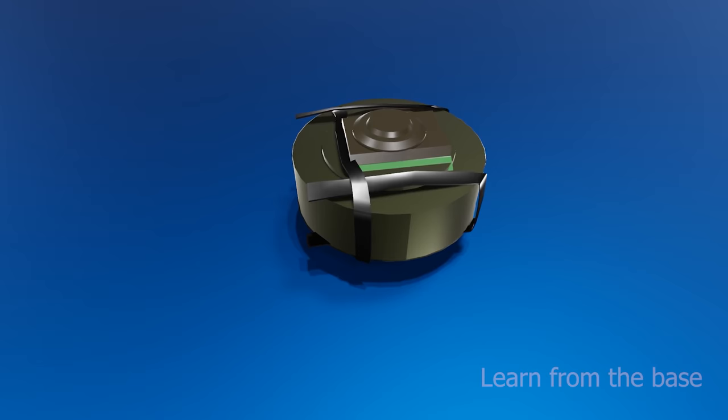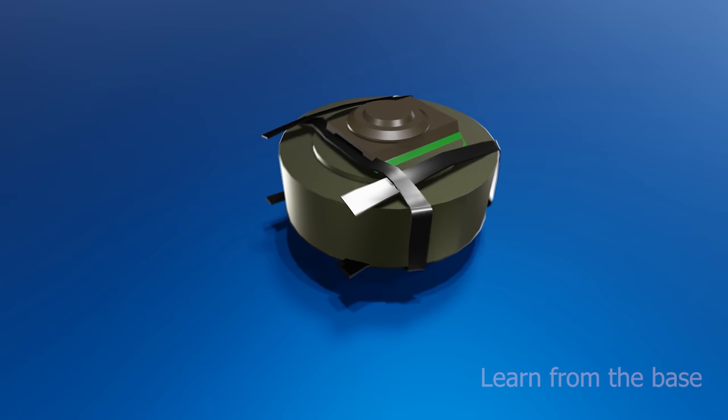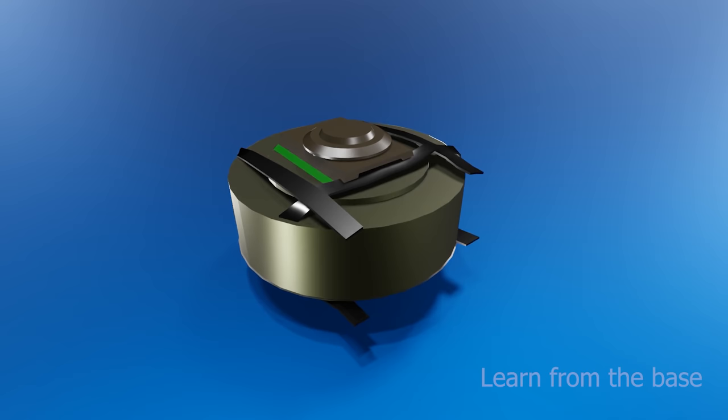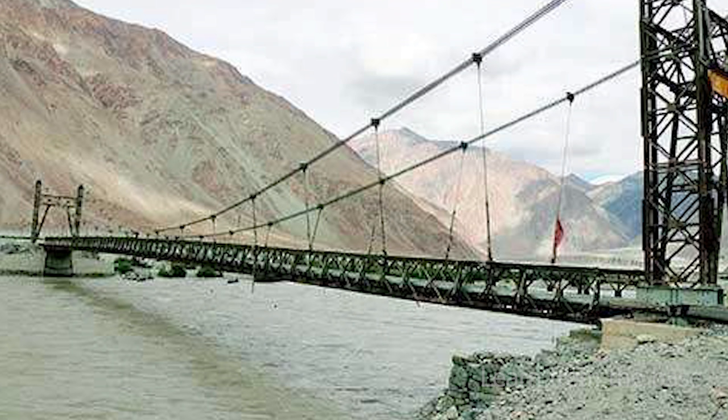Antipersonal mines were initially developed to protect anti-tank mines and stop them from being removed by enemy soldiers. They were used defensively to protect strategic areas such as borders, camps, or important bridges, and to restrict the movement of opposing forces.